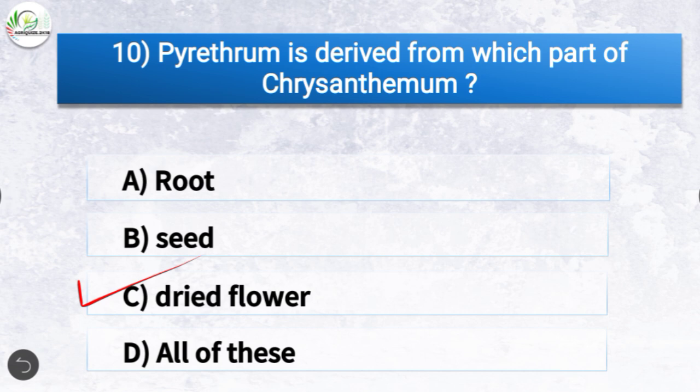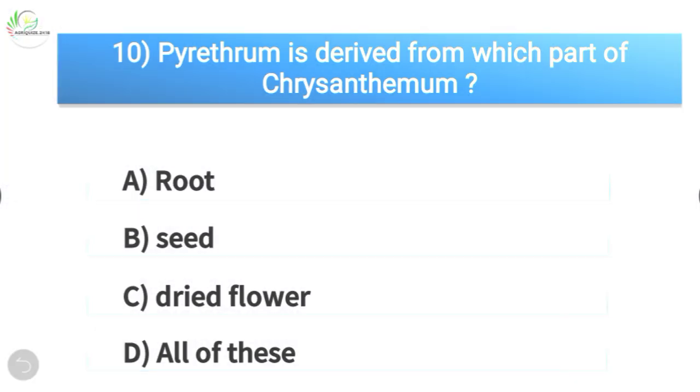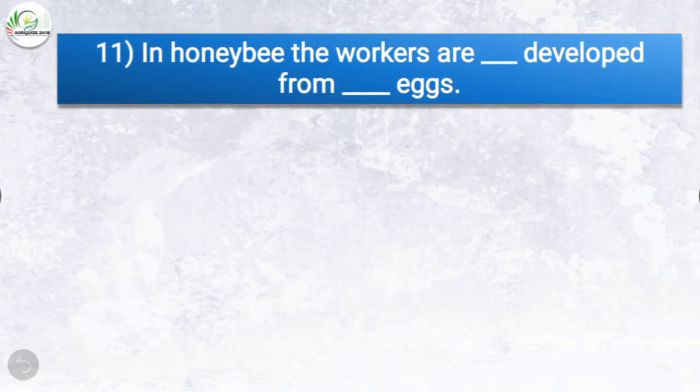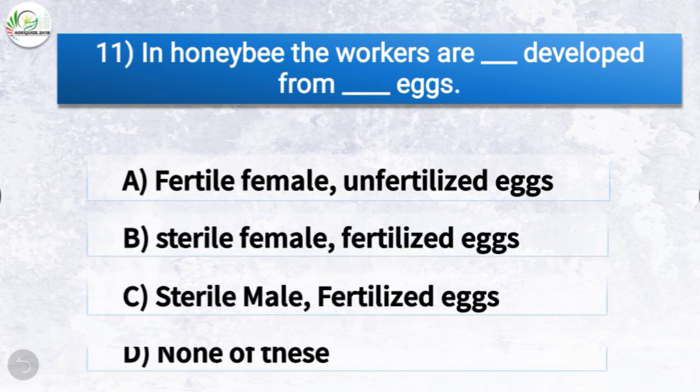Question number eleven: in honeybee, the workers are dash developed from dash eggs. The options are fertile female from unfertilized eggs, sterile female from fertilized eggs, sterile male from fertilized eggs, or none of these. The correct answer is option B, sterile female from fertilized eggs. So in honeybee, the workers are sterile female developed from fertilized eggs.